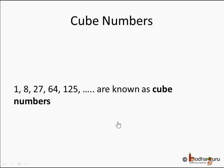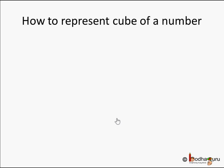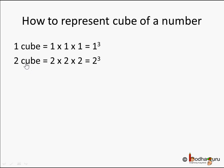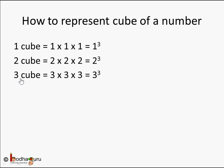All these numbers — 1, 8, 27, 64, 125 — are known as cube numbers. How do we represent the cube of a number? It's pretty simple. Take any number, say 2: two cubed means 2 × 2 × 2, the same number multiplied by itself 3 times, written as 2³. Similarly, 3³ is 3 × 3 × 3, and 4³ is 4 × 4 × 4. This representation — anything to the power 3 — means it is a cube of that number.